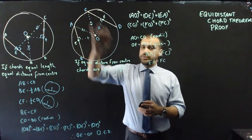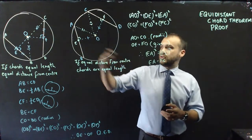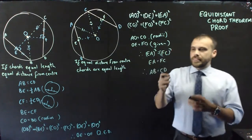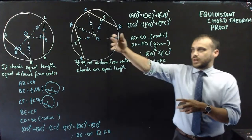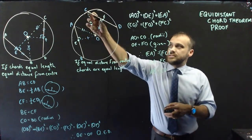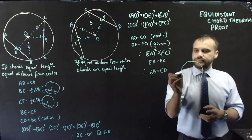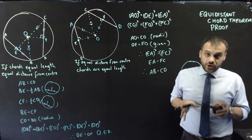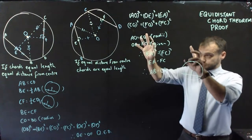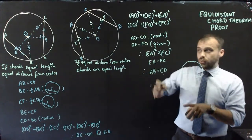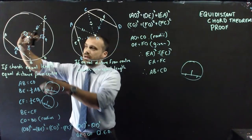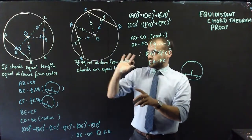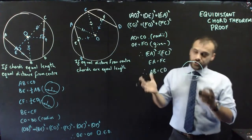Now, if EA equals FC, therefore AB equals CD, because AB is double whatever AE is and CD is double whatever CF is — and the reason for that is the perpendicular bisector theorem we used in the first proof. So it's important to note that these are two different proofs. In one, you're being told the chords are the same length and asked to prove they're equidistant. In the other, you're told they're equidistant and asked to prove the chords are equal. They are the converse of each other, and you can now prove both.